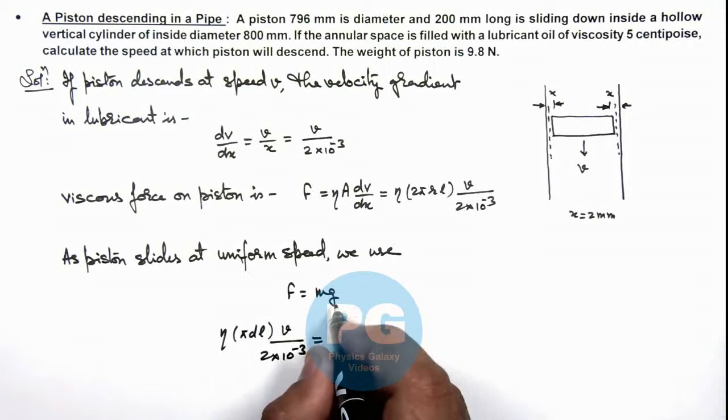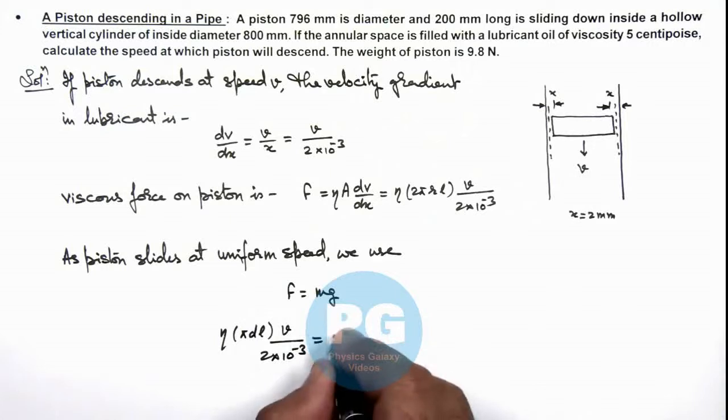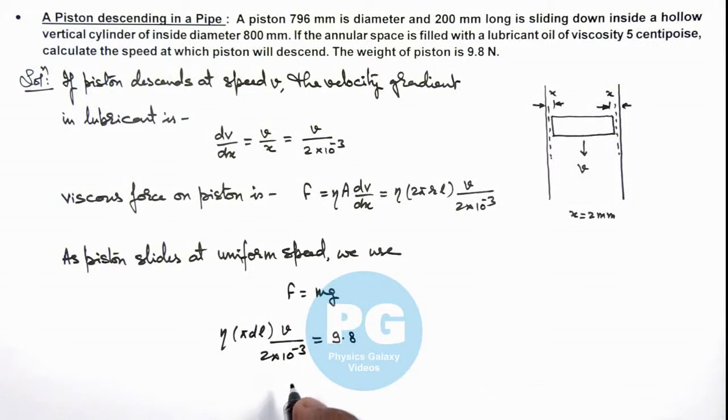And in this situation we are given that the weight of piston is 9.8 newton. So this is 9.8. And here if we substitute all values and we calculate the value of speed of piston, this is given by 9.8 multiplied by 2 into 10 to power minus 3.